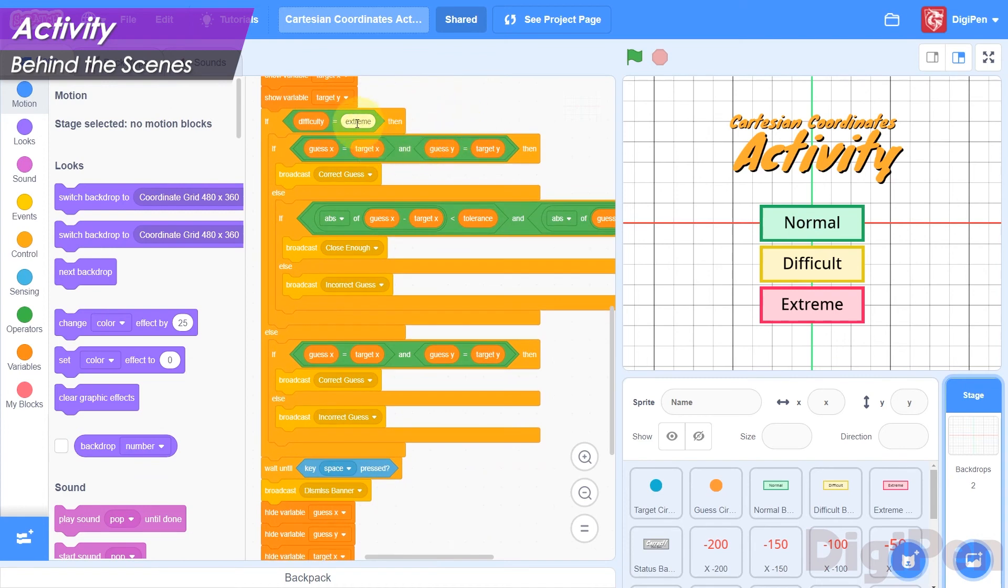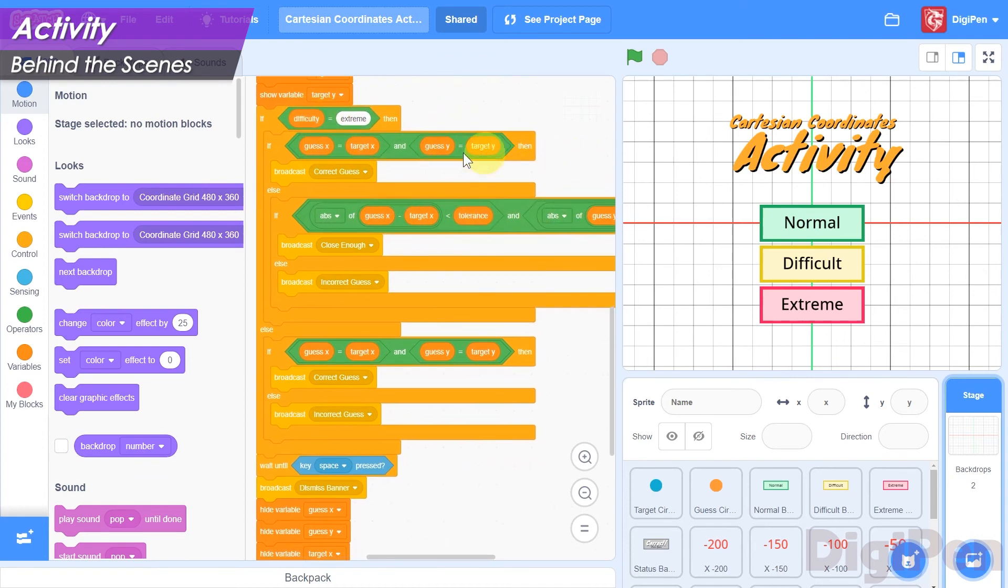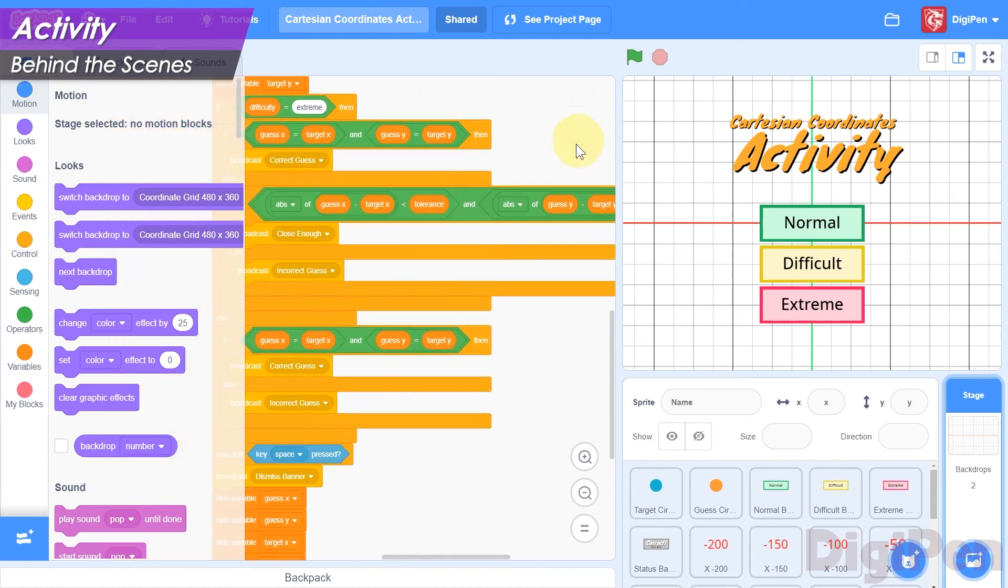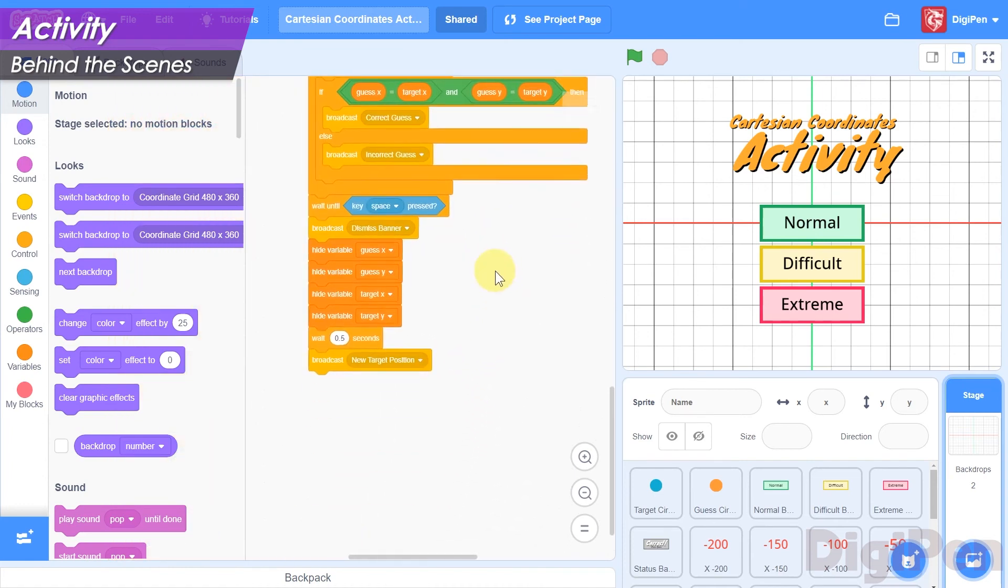If the game is being played in extreme difficulty, then it's a bit more merciful with its judgment. After it's done telling you how you did, the Stage sends the message that it's time to select a new target position, and it starts all over again.